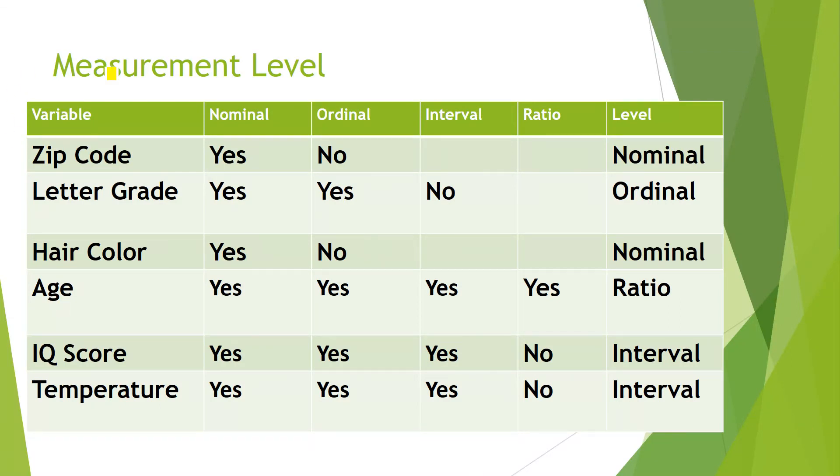Here I have made a table to give you a more detailed view. Measurement levels, variable, nominal, ordinal, interval, ratio and level. Zip code is nominal. You can have the zip code or area code. But there is no ranking required. No ordinal. Its level is nominal. Letter grade, nominal yes, ordinal yes. So it is ordinal. Hair color, nominal yes. And all are no. Because there is no ranking. If someone has a black color or blue or gray or whatever. So no ranking. Nominal. Age. Nominal yes. Ordinal yes. Interval yes. Ratio yes. So it is ratio. IQ score, nominal, ordinal, interval yes. Ratio no. So it is interval. Temperature. Yes, yes, yes and no.